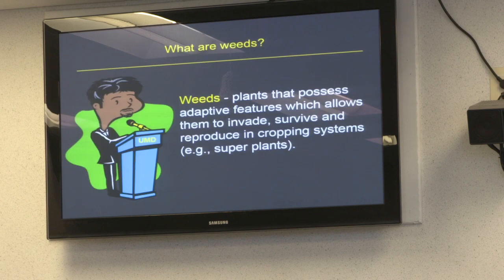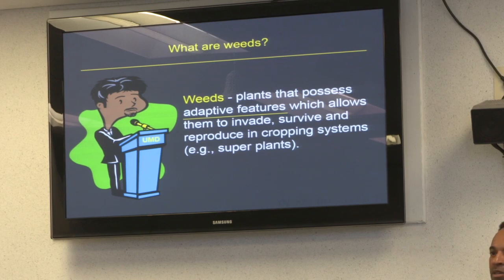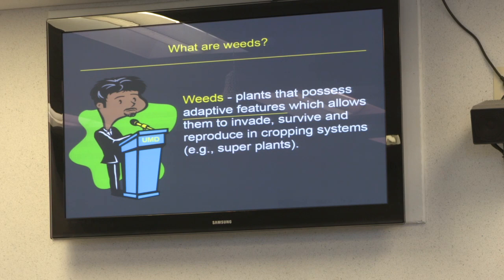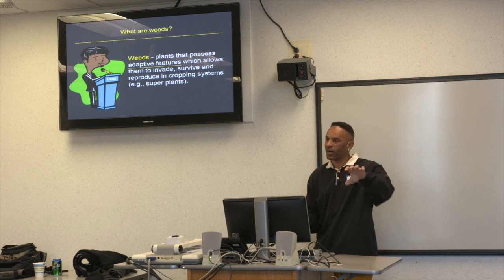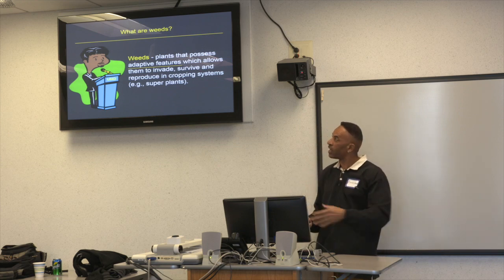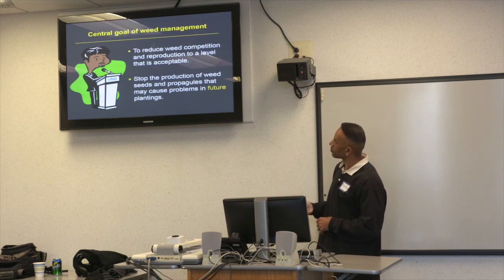I'll start with a definition of weeds. Weeds are plants that possess adapted features which allow them to evade, survive, and reproduce in cropping systems. The most important part is the 'adapted features.' The old-school definition — 'a weed is a plant out of place' — isn't accurate. A corn plant in a soybean field is a mistake, not a weed, because it doesn't have those adapted features. The adapted features are what allow weeds to establish everywhere, including ditch banks and other places.